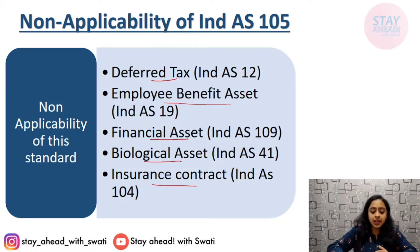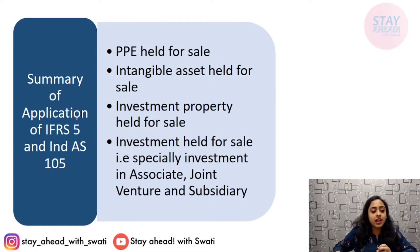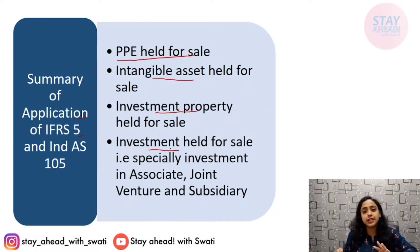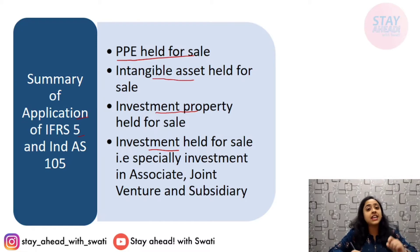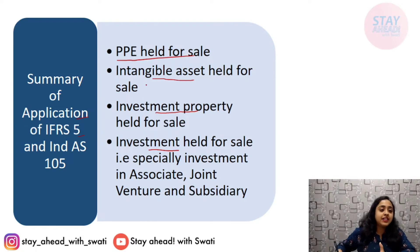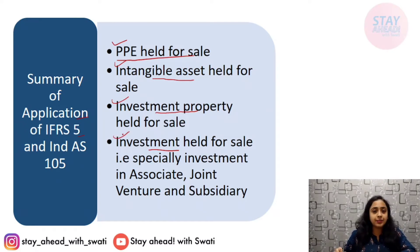The question arises: where do we apply this standard? The application of IFRS 5 or Ind AS 105 covers: firstly, PPE (Property, Plant and Equipment) held for sale; secondly, intangible assets held for sale; thirdly, investment property held for sale; and fourthly, any investment held for sale. These are four asset categories where you have to apply this standard when they are held for sale.